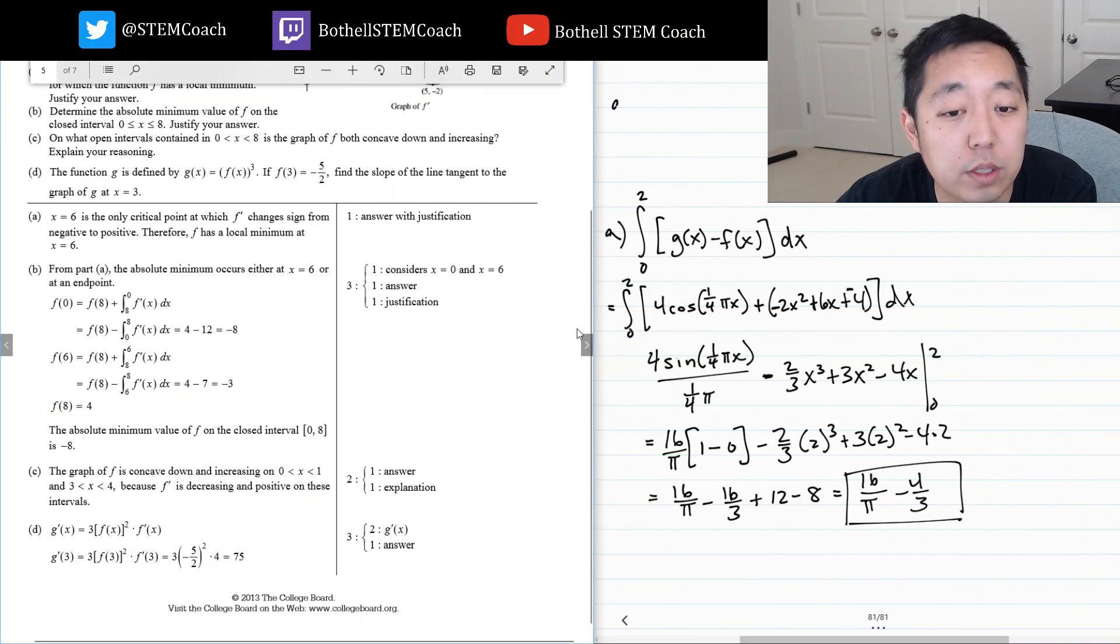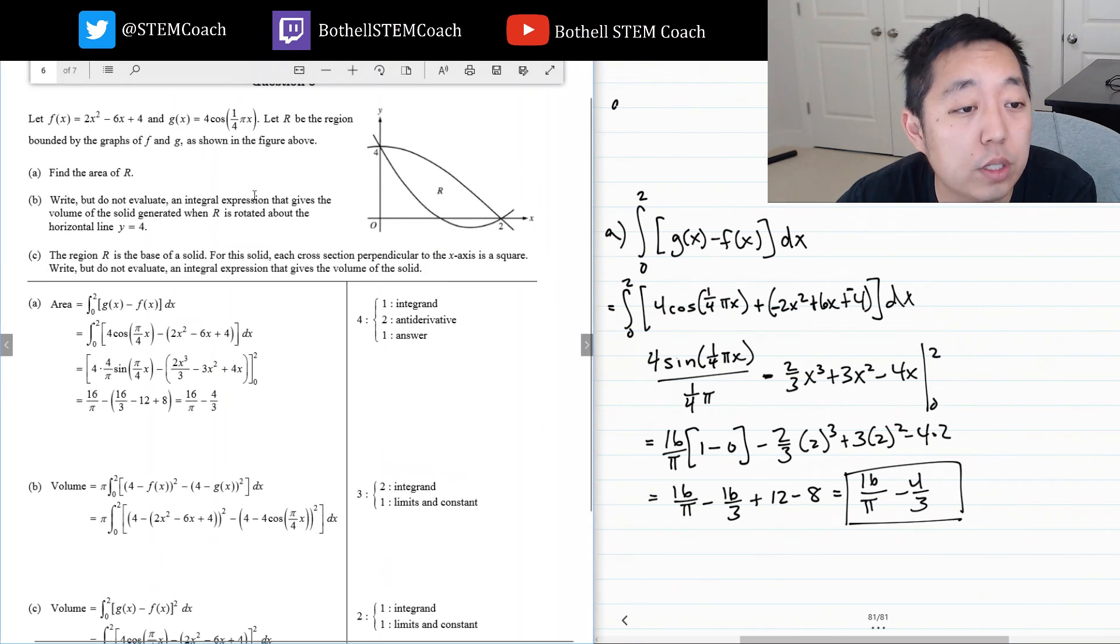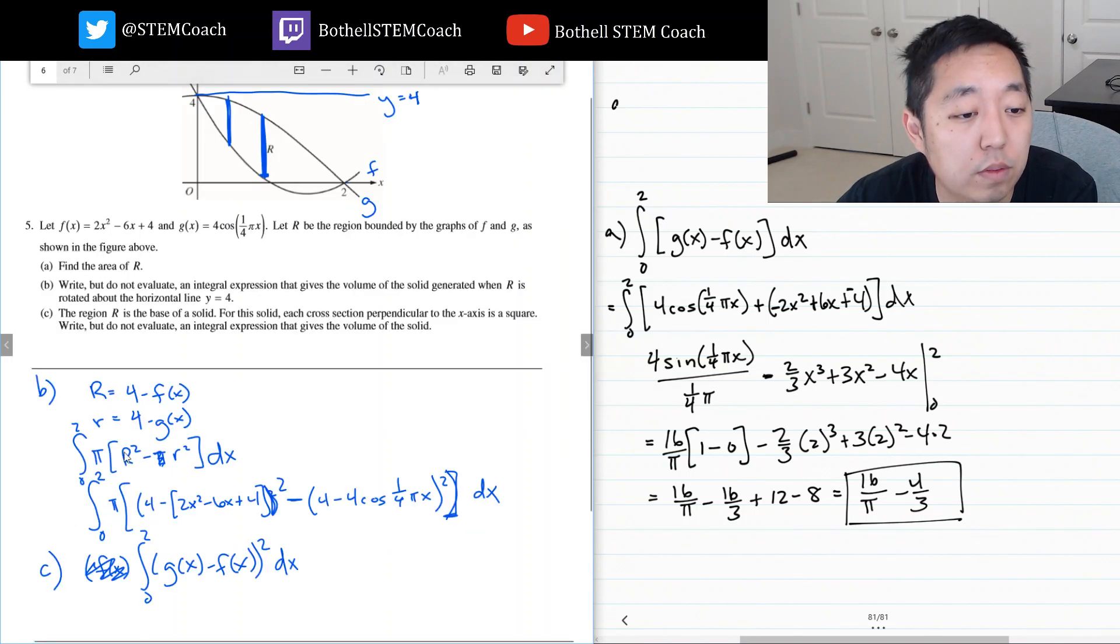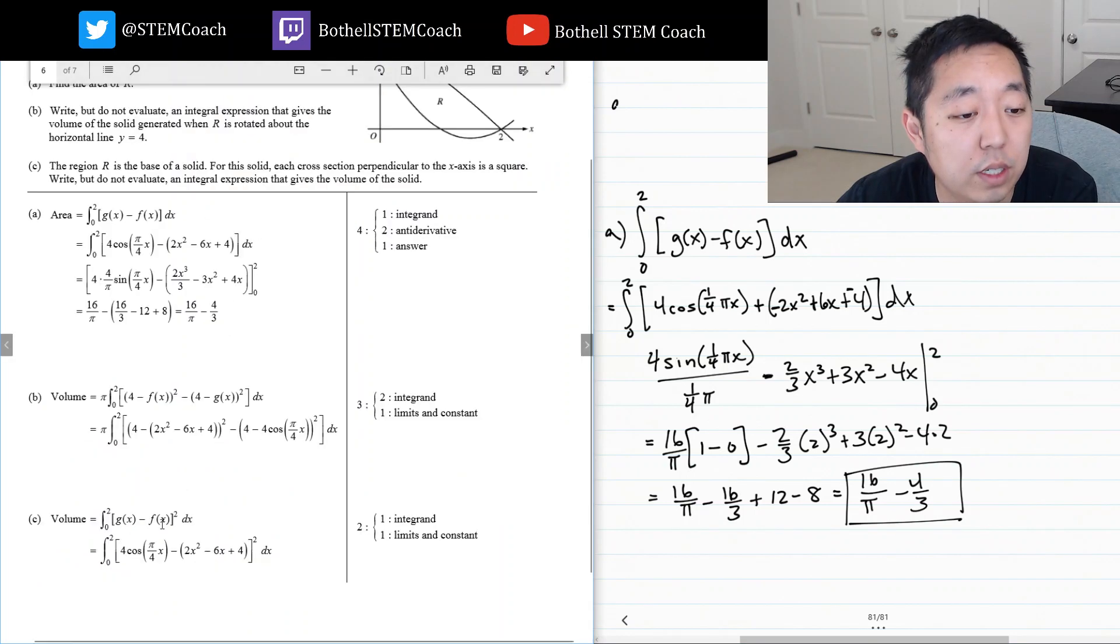So that was easy enough. So let's look at the scoring solutions. 16 over π minus 4/3. Excellent. Volume is all of this. It's [4 - f(x)]² minus [4 - g(x)]². Is that what I did? 4 minus f(x), 4 minus g(x), good. And then this one, if I had filled it in, [g(x) - f(x)]². Add that part. Doing good on this one. So that completes the fifth question, and I'll see you in the next video when we do the last question of the calculus exam.